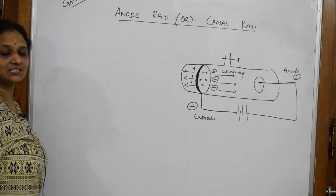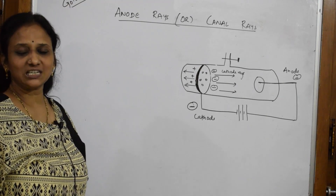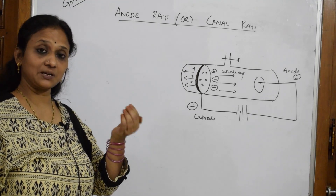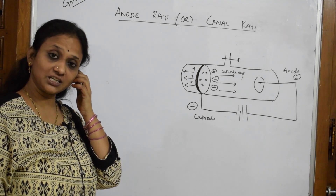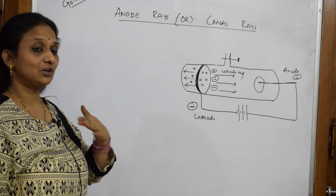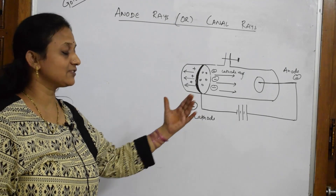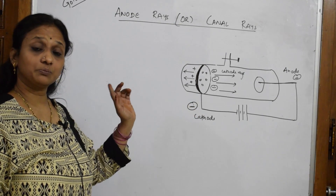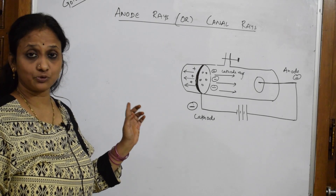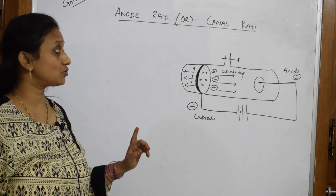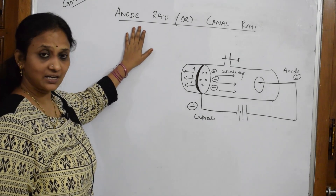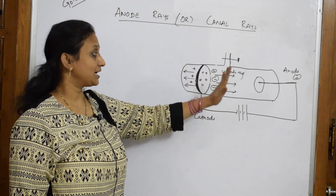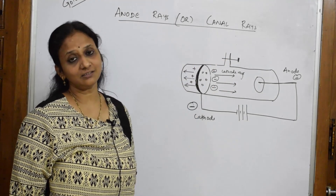We have already studied Thomson's e/m ratio, and Julius Plucker as well. Now we will come to a concept where Goldstein gave his assumption about positively charged protons, which are also called anode rays or canal rays. Let us see the construction.